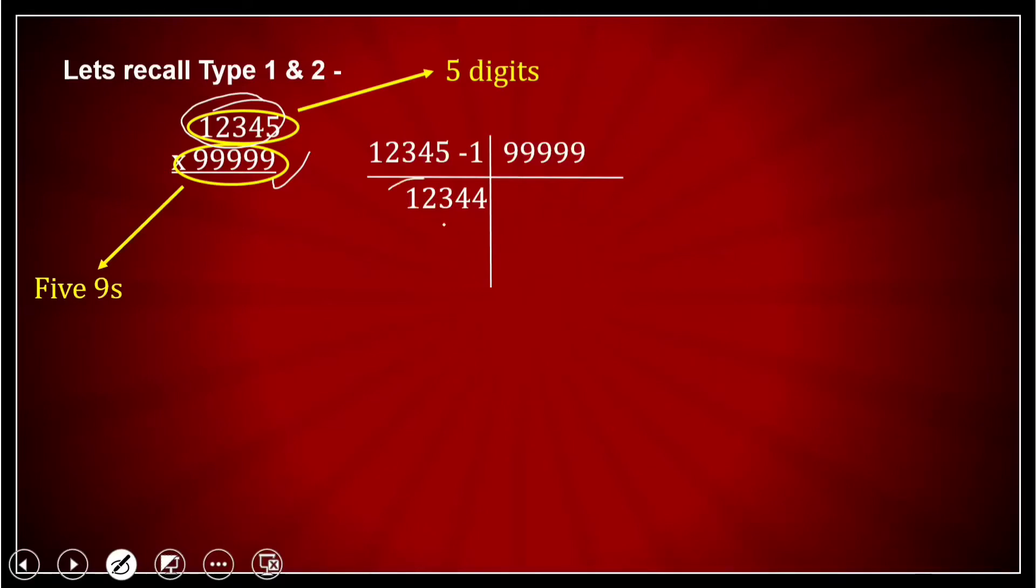12,345 minus 1 is 12,344. And I wrote the same number. This number, 12,344, I wrote here also. I wrote like this.